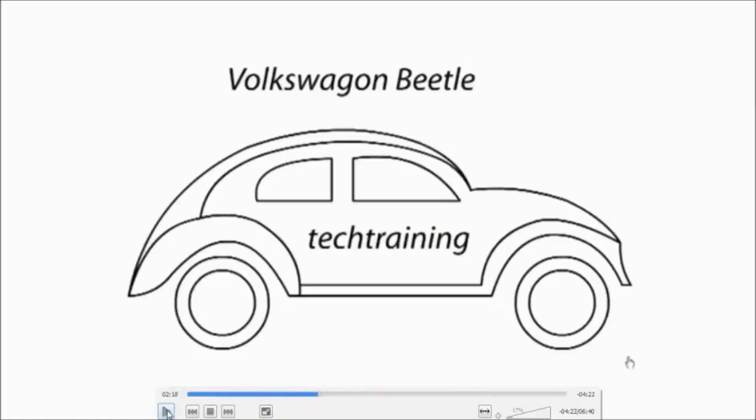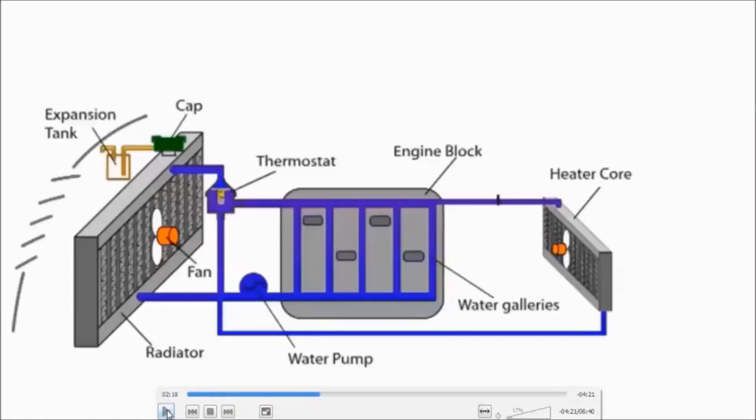Now we will take a look at modern water cooled engine. Different components that are utilized in water cooled engine are thermostat, engine block, heater core, water pump, radiator, radiator fan, expansion tank, and cap of radiator tank.